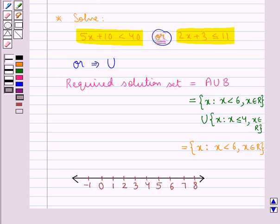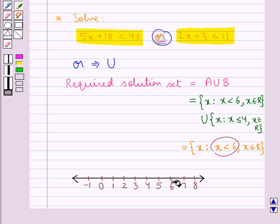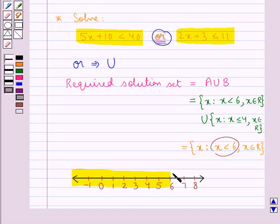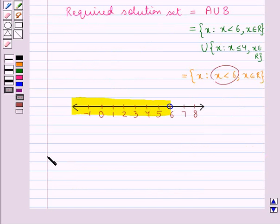To show the required solution set x less than 6, we shade the portion to the left of the number 6 on the number line, and we mark the point 6 with an open circle, which shows that 6 is not included in the graph. So this completes the session — we have understood how to solve the combination of two inequations.